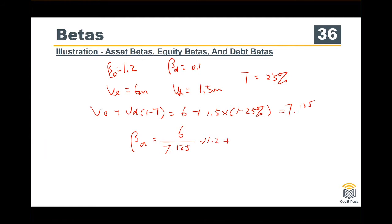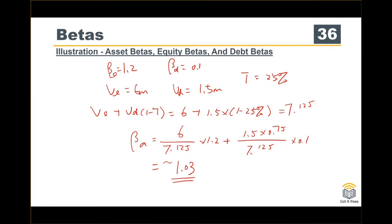Then you can find the asset beta by applying the formula — just put the parameters into the formula and you get the asset beta. This illustration shows you how to work with asset beta.